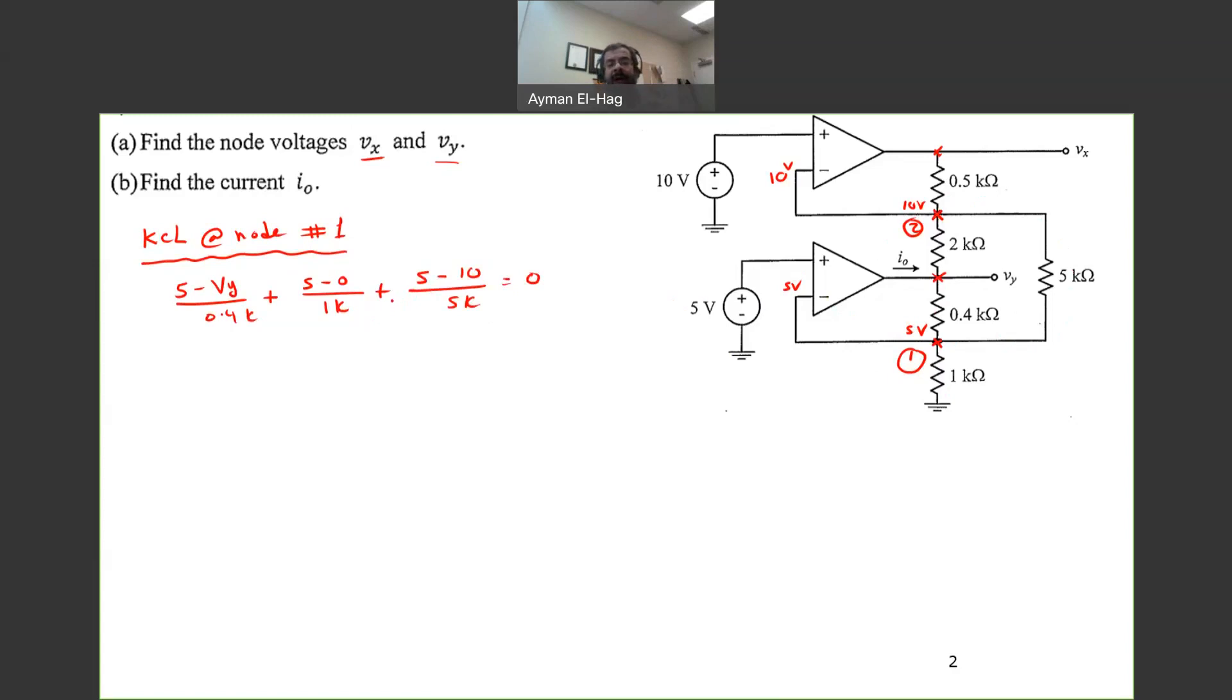Then we can solve and find Vy directly. So what we do, how to analyze this. Let's multiply the whole equations by 5K. So we'll get here, if we multiply the whole thing by 5K, this will become 12.5 times 5 minus 5 times 5 plus minus 5. So all of this gives me 82.5 minus 12.5 Vy. So from this, your Vy will equal to the 82.5 divided by the 12.5 and this will give me 6.6 volt. So my Vy now is equal to 6.6 volt.